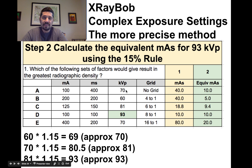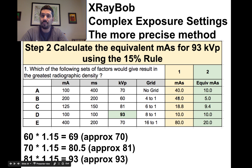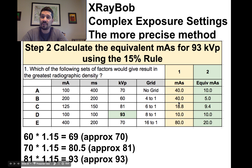Now we sum the ranks. For condition A: 2 + 3 + 1 = 6. Condition B gets 8, condition C gets 8, condition D gets 9, and condition E gets 9. Condition A gave the lowest number, which means it has the highest density, because we ranked from greatest density to least density — so the lowest sum corresponds to the greatest density.